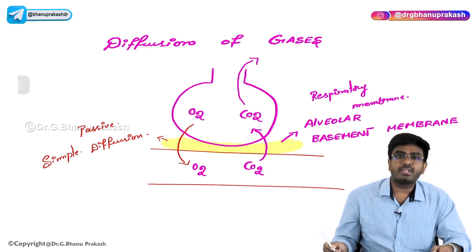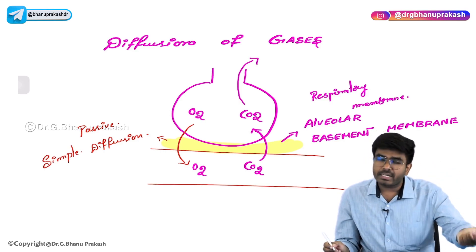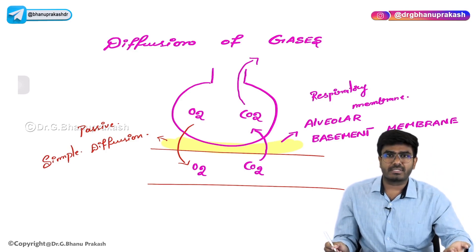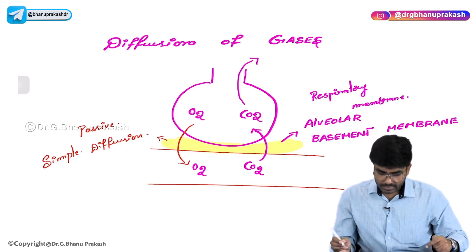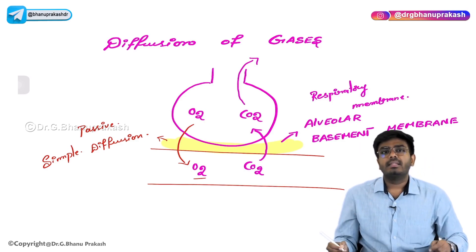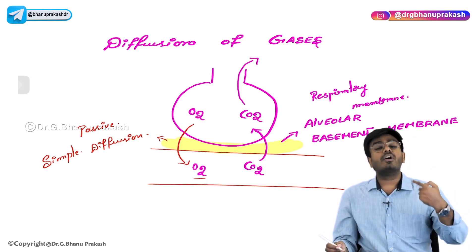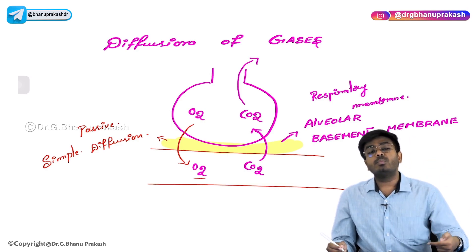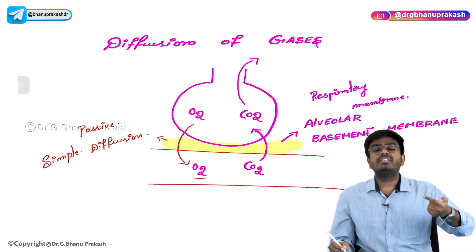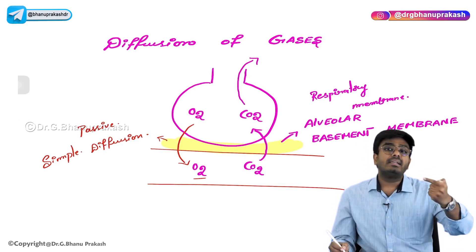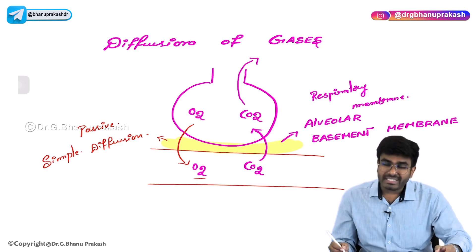Why is it simple diffusion? Because oxygen is moving from high concentration or high partial pressure to low partial pressure. In the deoxygenated blood, the partial pressure of oxygen is less. In the alveoli, the partial pressure of oxygen is more. So oxygen is moving from high partial pressure to low partial pressure - this is simple diffusion based on gradient.